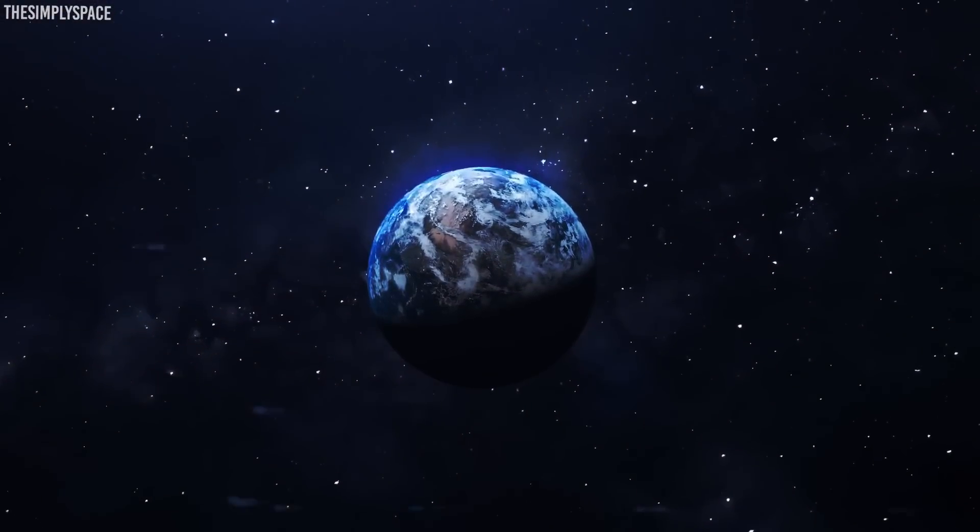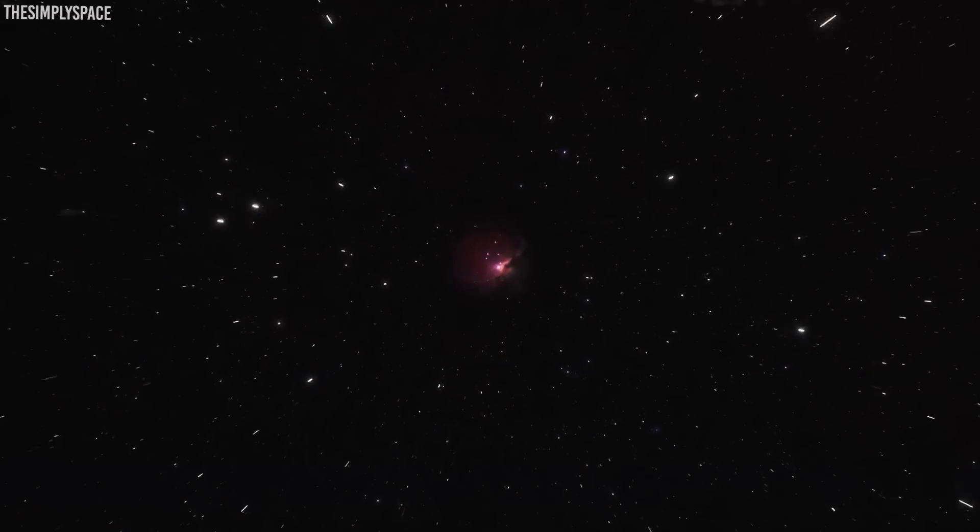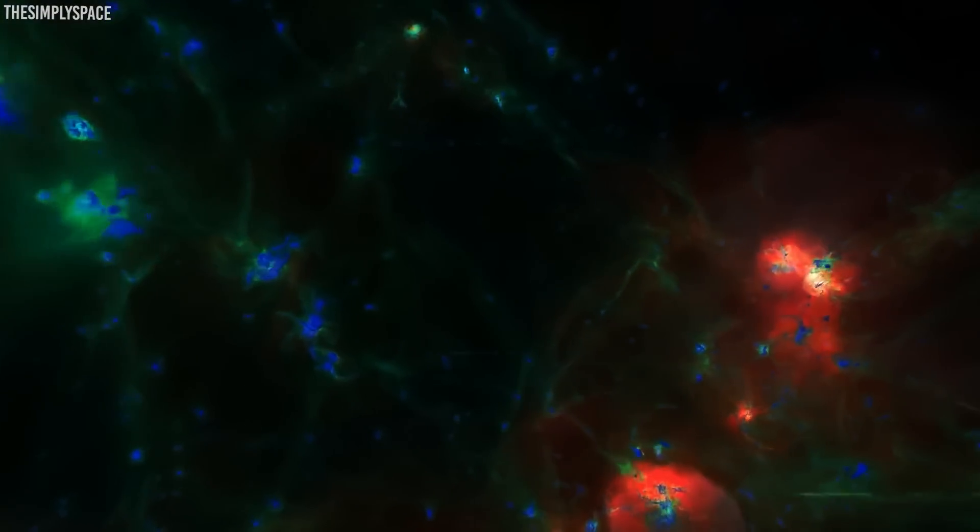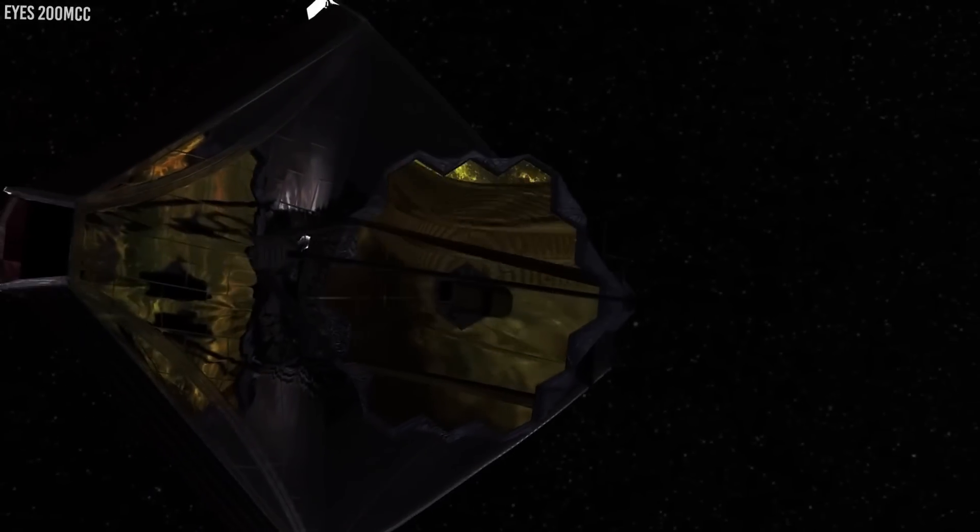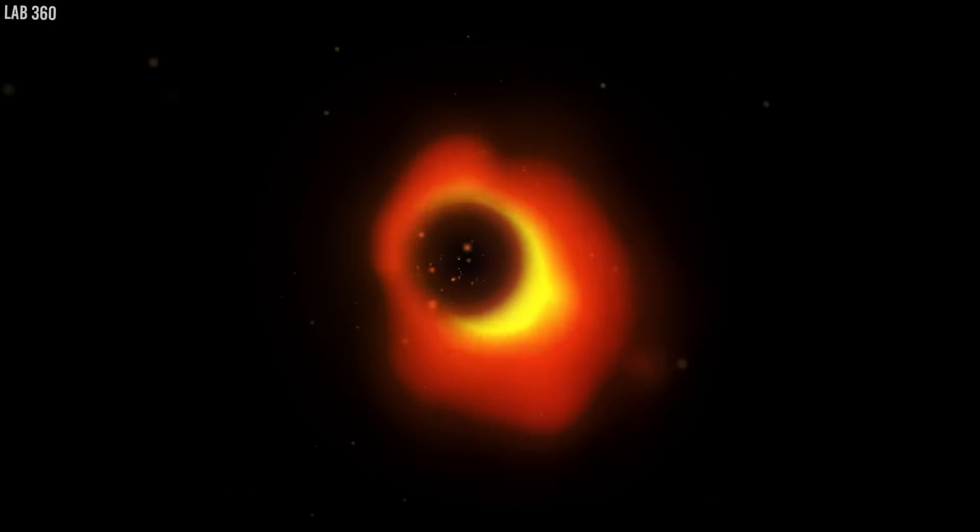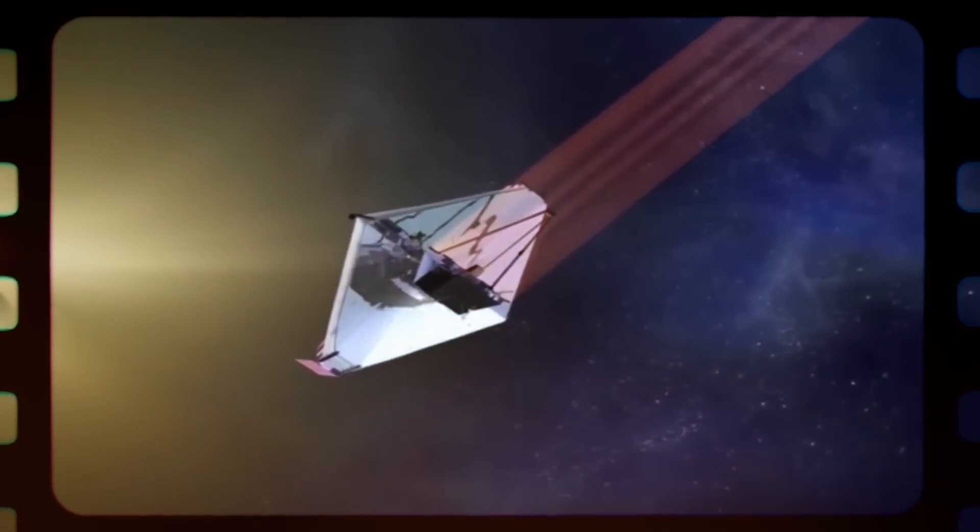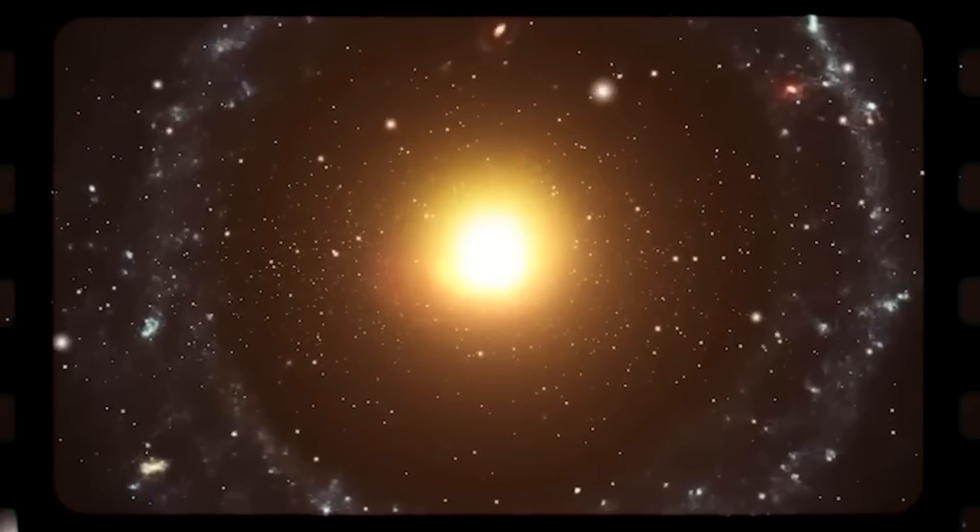Earth's atmosphere is like a cosmic puzzle. It lets some light through but keeps other kinds at bay. When it comes to infrared light, it's like an invisible barrier. This limitation has kept many ground-based telescopes from fully exploring the universe in this crucial range. However, the James Webb Space Telescope has found a way to soar above these restrictions, giving it a golden key to the cosmos.